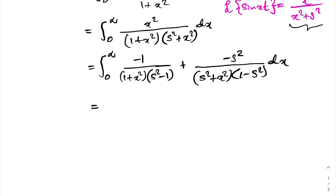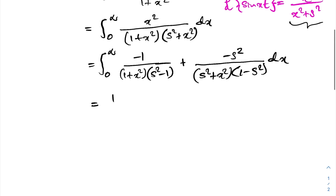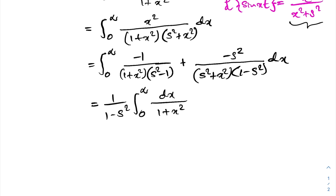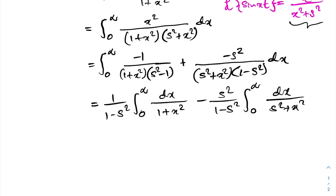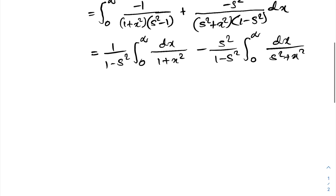We can simplify and break our integral into two different integrals. We factor out one over one minus s squared. We have one over one minus s squared times the integral from zero to infinity of dx over one plus x squared, minus s squared over one minus s squared times the integral from zero to infinity of dx over x squared plus s squared.